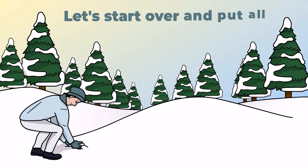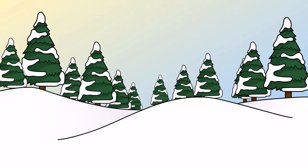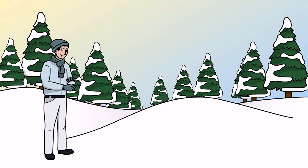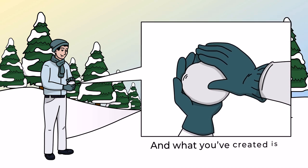Let's start over and put all of this together. Pick up a handful of snow, form it into a ball. That's one iteration of your process. And what you've created is one increment, one snowball.